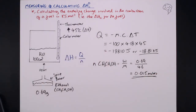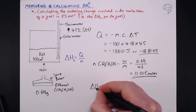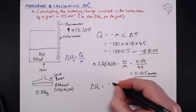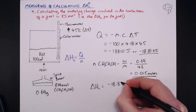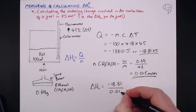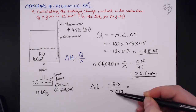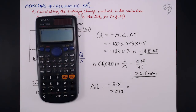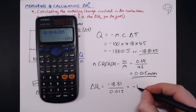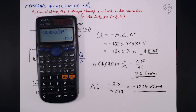Now we've got the two elements we need to find delta Hc. Delta Hc equals our energy change in kilojoules divided by the number of moles of ethanol: minus 18.81 ÷ 0.015, giving us minus 1254 kilojoules per mole — and that is our final answer.